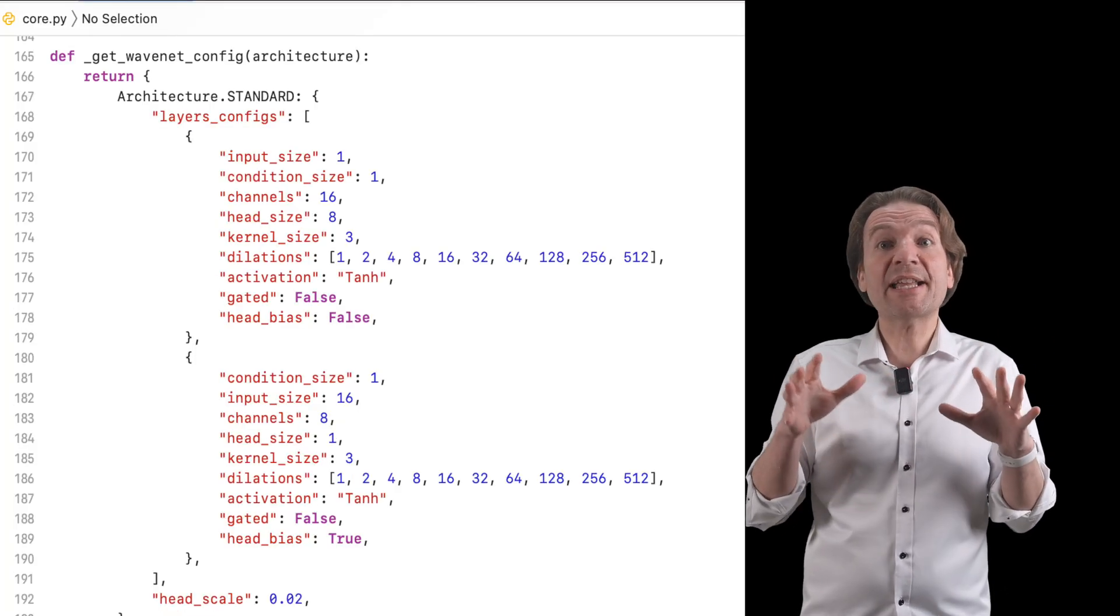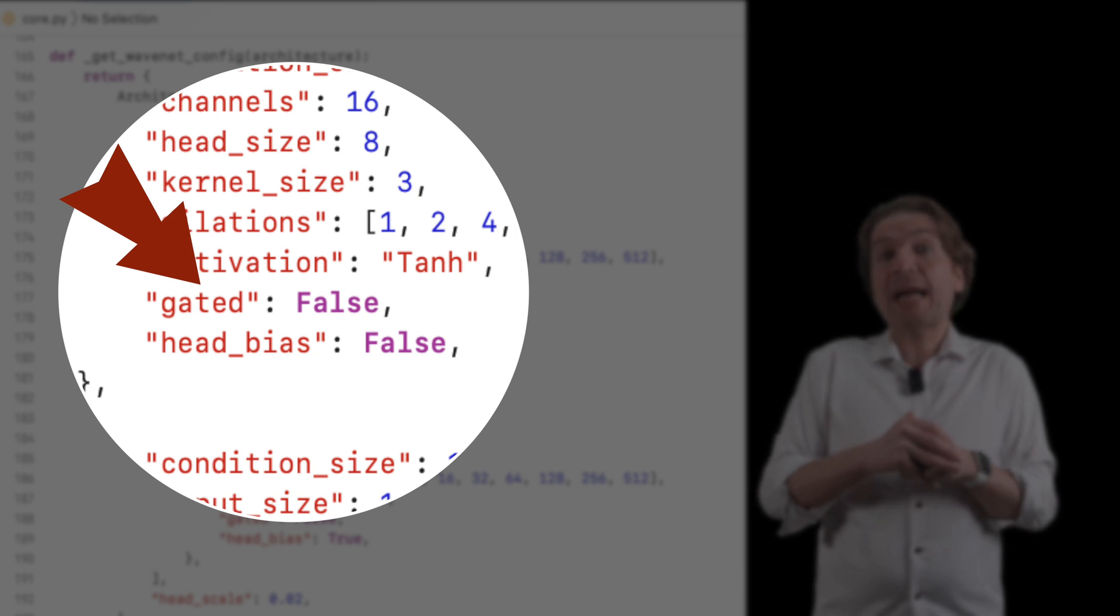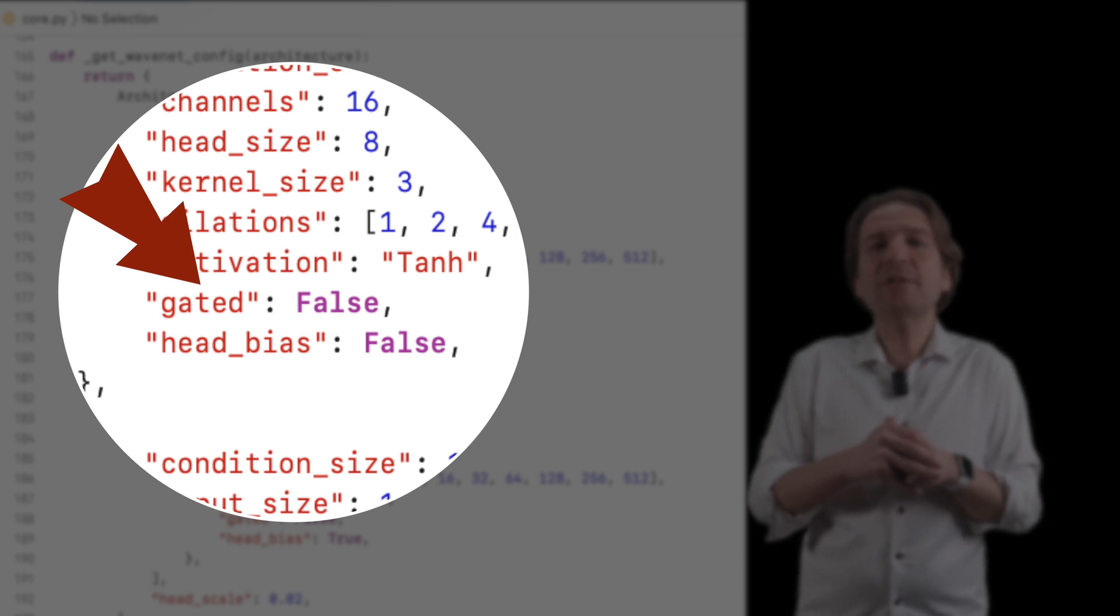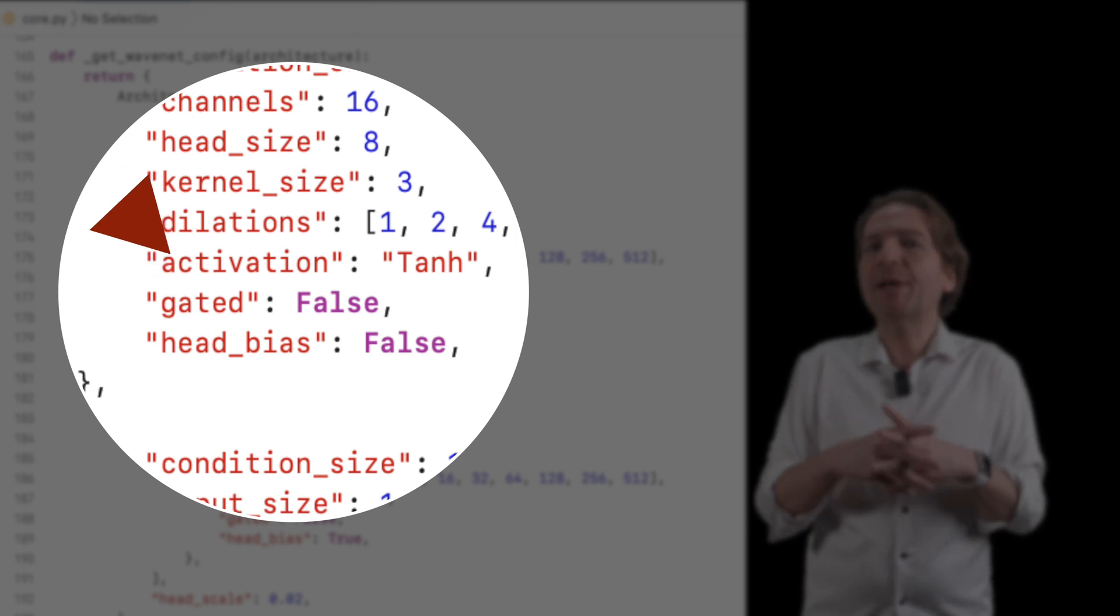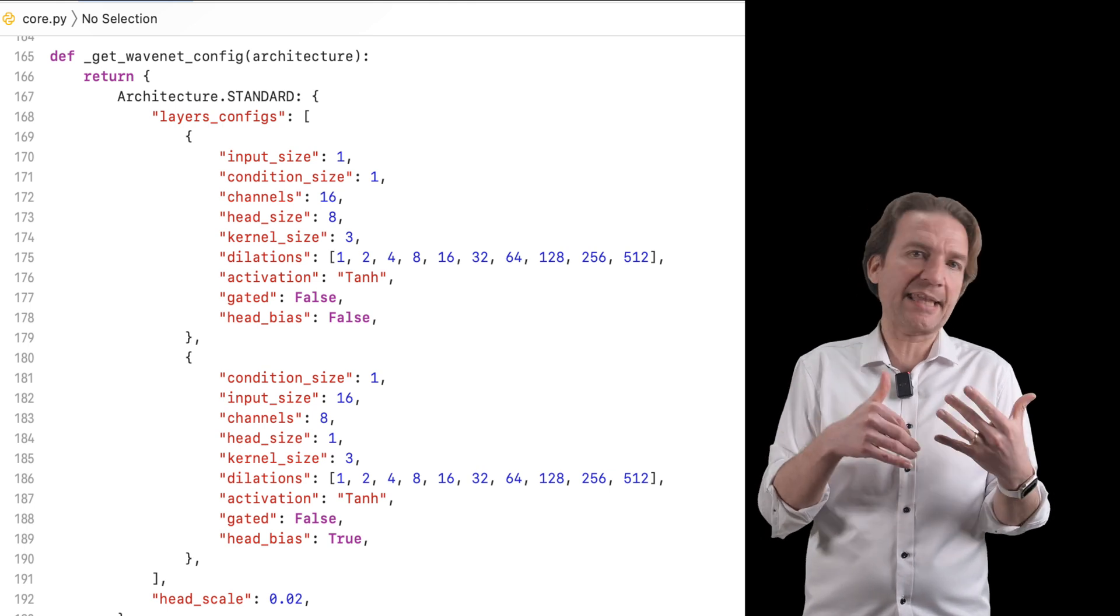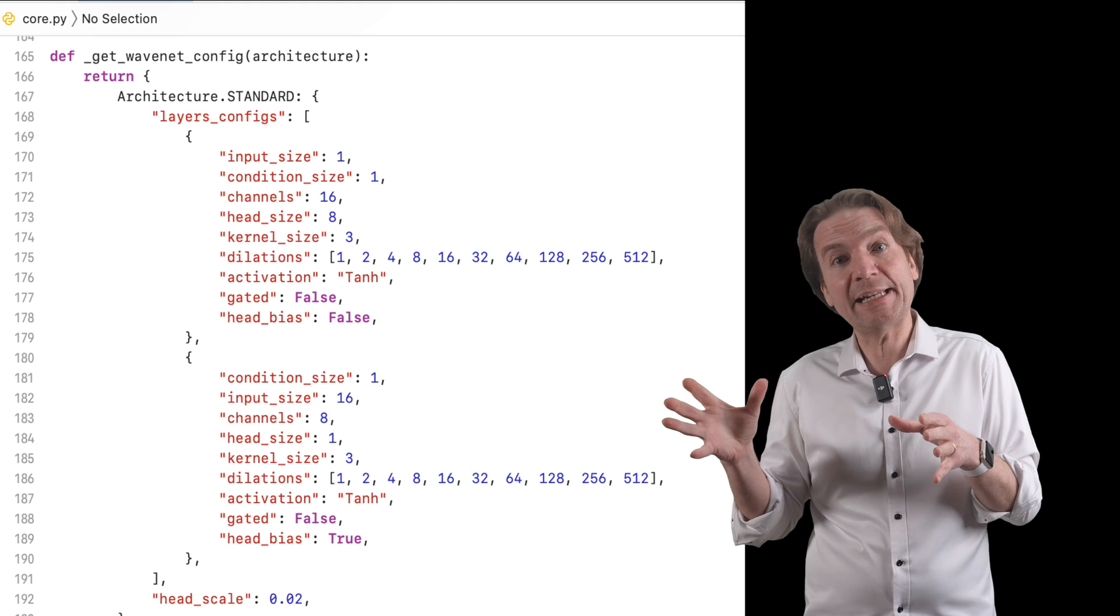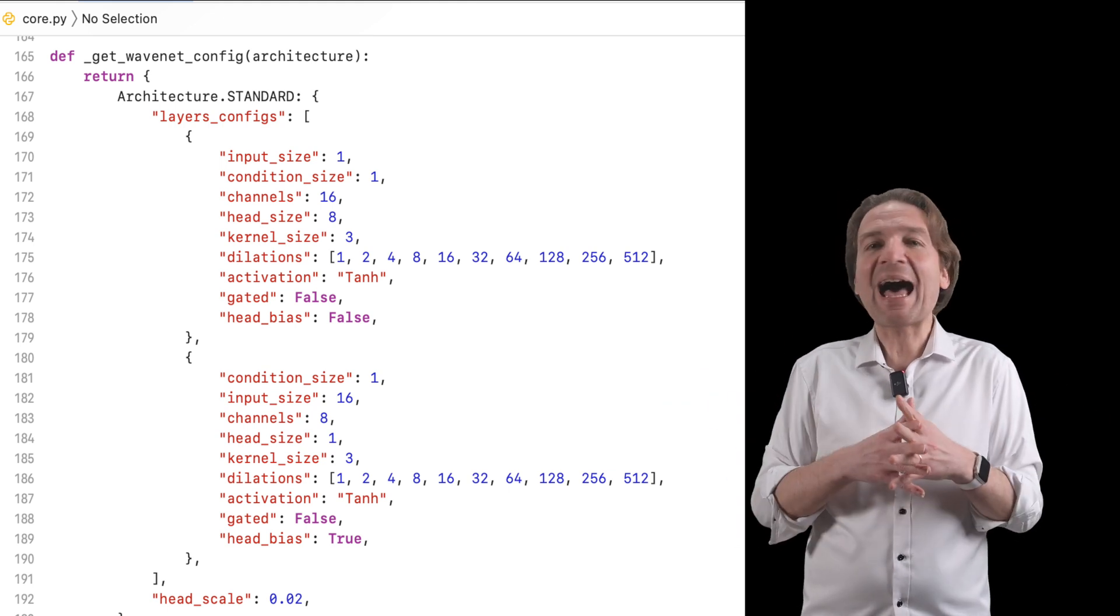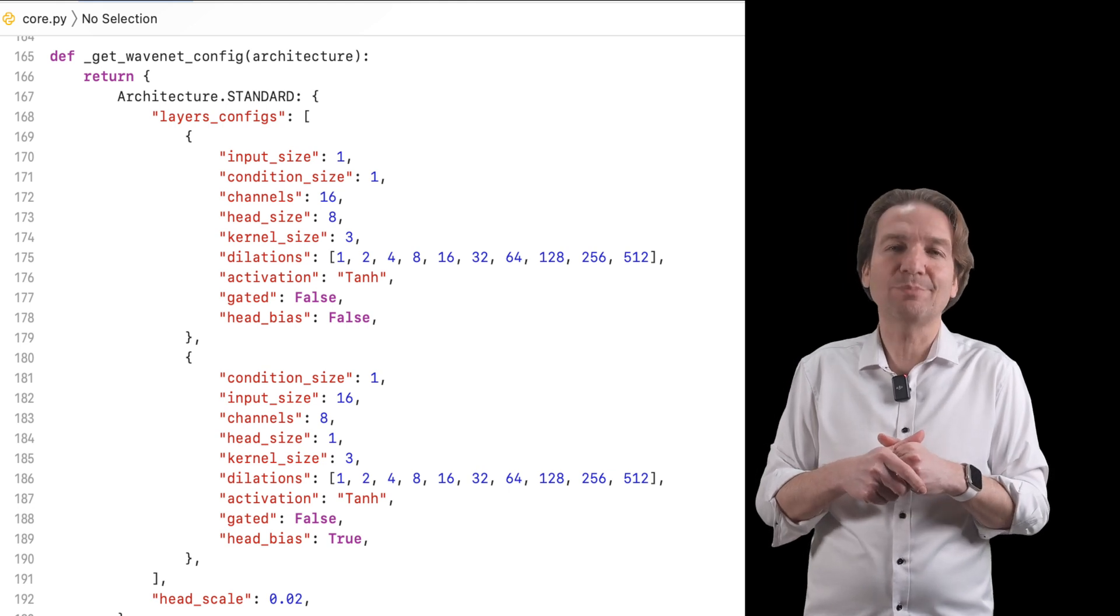Another parameter I have checked out is the gated boolean value in the architecture of our neural net. I read that the gated function should perform better. And in fact, in my tests, when I set the gated to true, I was obtaining better results in less time. But unfortunately, when I loaded the obtained NAMM file in the NAMM plugin, it was not working. I don't know why. If you know, please drop a message in the comment section below.